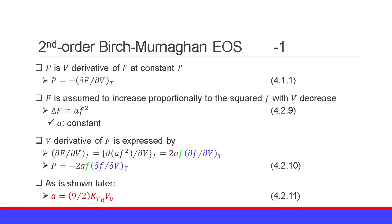Now let us introduce the second-order Birch-Murnaghan equation of state. As discussed in the previous section, pressure is the volume derivative of the Helmholtz free energy F at constant temperature T. Mathematically, P equals minus the partial derivative of F with respect to volume V at constant temperature T. Equation 4.1.1.